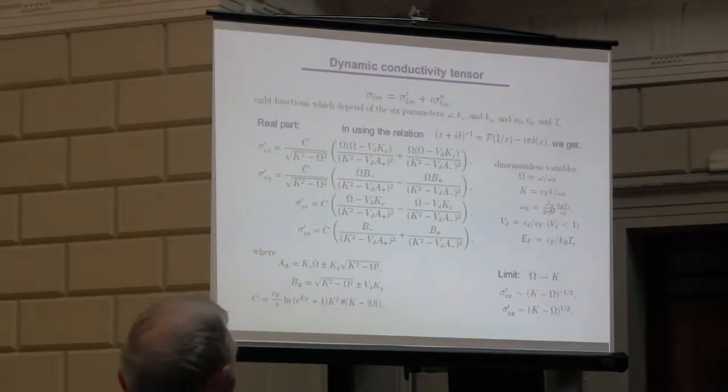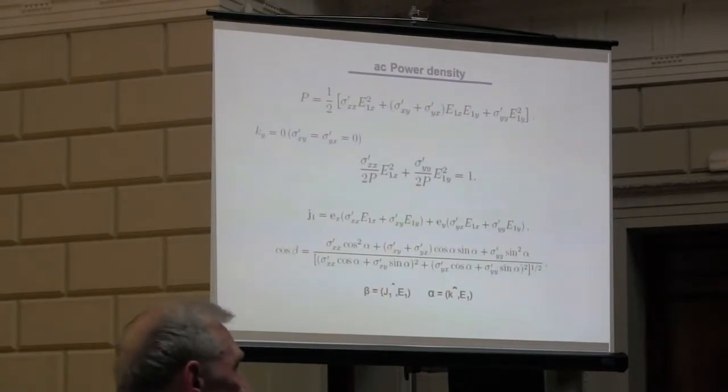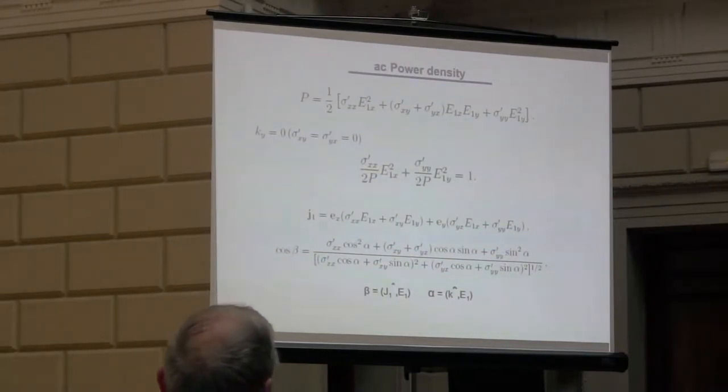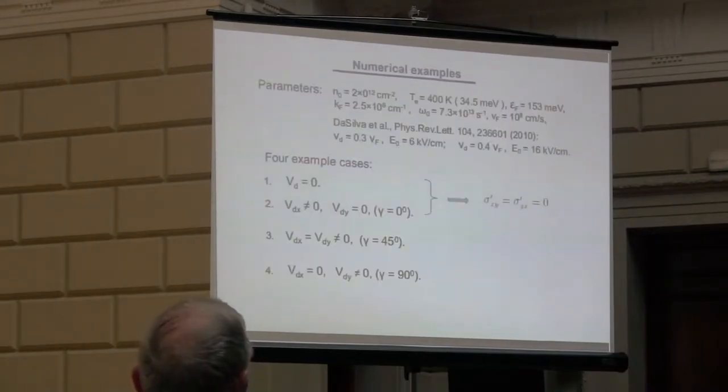Also, what is important for us is the drift velocity which is normalized to the Fermi velocity. As we are interested in the instability regions, then we need to analyze the AC power density. Due to the tensorial properties of the dynamic conductivity tensor, this is rather a linear combination, not purely a quadratic expression, which also appears if there is anisotropy. For us, it is important the angle shown on the last line, on the bottom of the slide, this is the angle between the AC current and the AC field, and this is characterized and induced in this system by the k-dependence and the DC field.